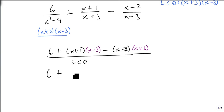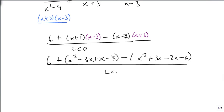So now we just multiply this through and get x squared minus 3x plus x minus 3 minus x squared plus 3x minus 2x minus 6, all over the LCD. Combine like terms. First let's distribute the negative through: minus, minus, plus, plus. Combine like terms.